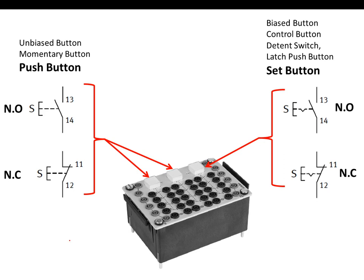In the actual lab environment we use a signal input plate which provides two types of buttons: push buttons and set buttons. The push button can be normally open or normally closed depending on the contact selected. Similarly, the set button can be normally open or normally closed.